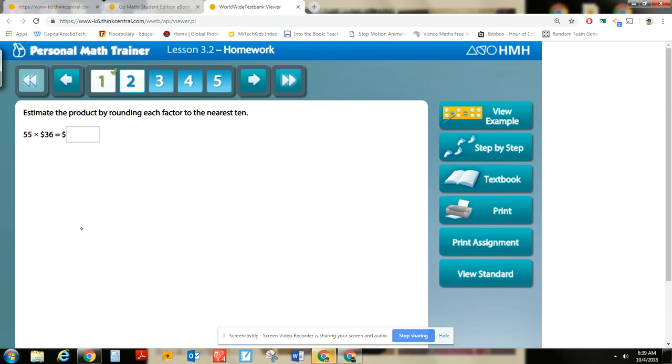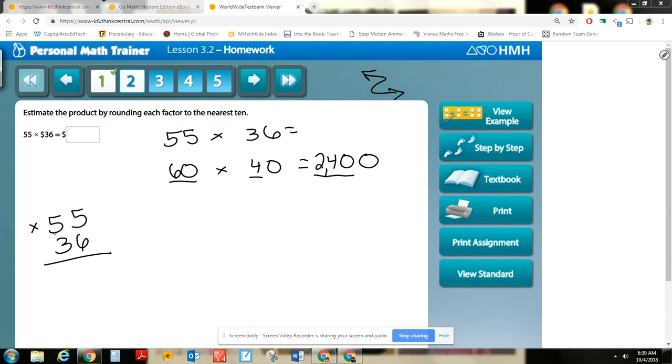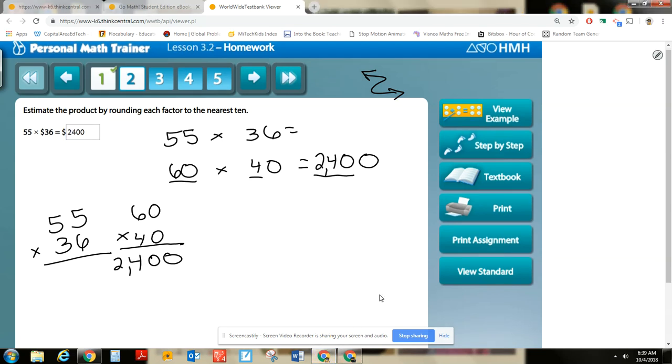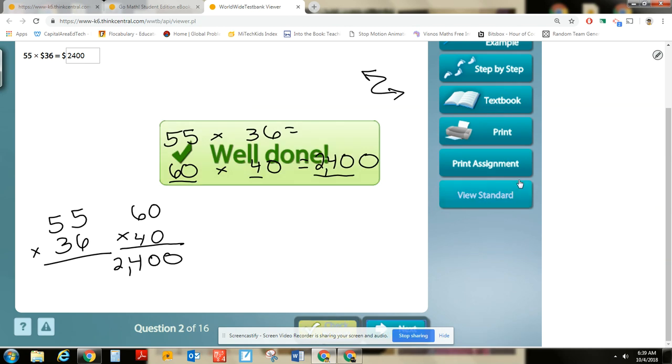All right, so if you do your problems vertically like I do, you would just write your estimated numbers off to the side here. All right, we're going to multiply. It is important that you put this symbol. 6 times 4 is 24, 1, 2, 0. Boom, there you go.